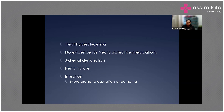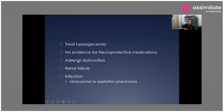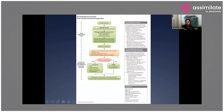Treat hyperglycemia. There is no evidence for the role of neuroprotective medications, so they should not be used. Adrenal dysfunction should be treated accordingly. For renal failure, RRT can be used as indicated. Although patients are more prone to aspiration pneumonia, if infection leads to sepsis with organ failure, broad-spectrum antibiotics are required.